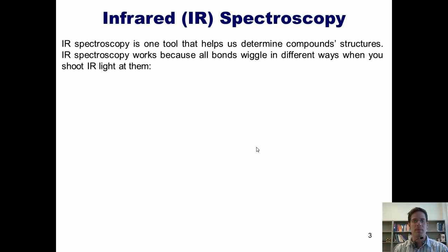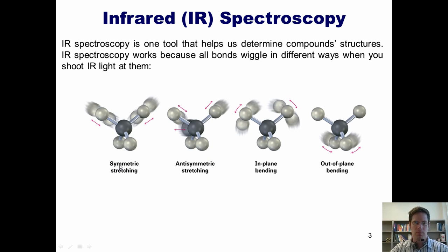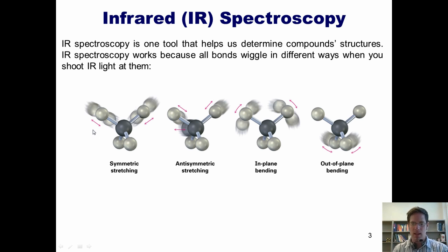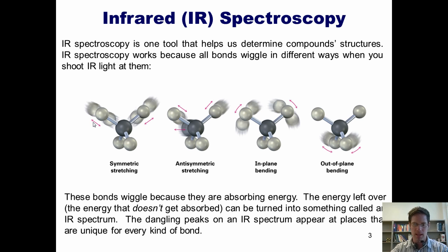IR spectroscopy is one tool that helps us determine compound structures. It works because all bonds wiggle in different ways when you shoot IR light at them. If I fire energy in the form of infrared light at molecules, they begin to move and absorb energy. The infrared energy that's left over — the energy that doesn't get absorbed — passes through the molecule and is detected and converted into an IR spectrum. The dangling peaks in an IR spectrum appear at places that are different and unique for each kind of bond.